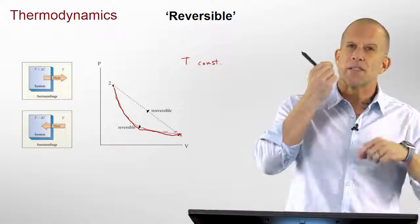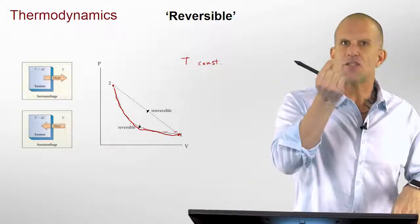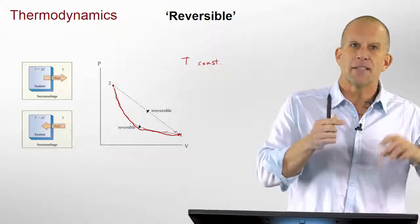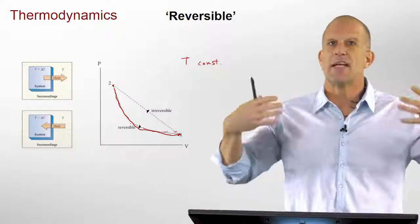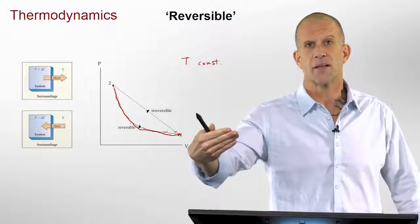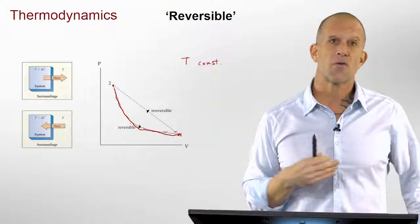And that's very critical because that means by making these changes small enough, slow enough, we stay basically, by making them infinitesimal, we stay in equilibrium along the process so that we can use thermodynamics the entire way across it.